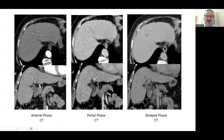Enhancements can also be evaluated by CT. You can see the early arterial contrast enhancement, peripheral capsular enhancement, and central washout, and in the delayed phase, total washout of the lesion.